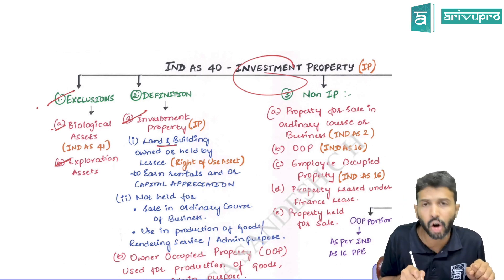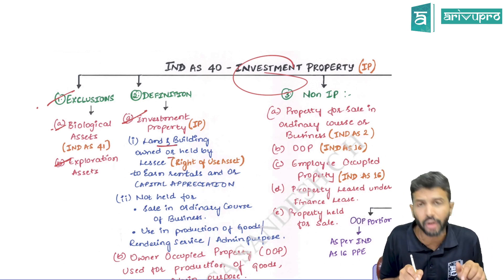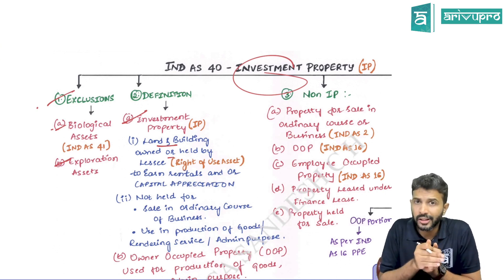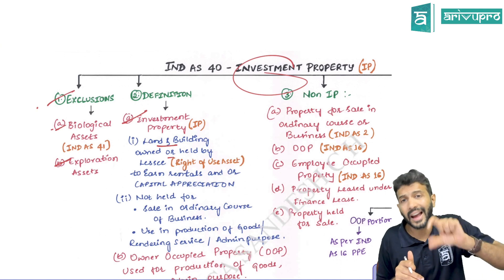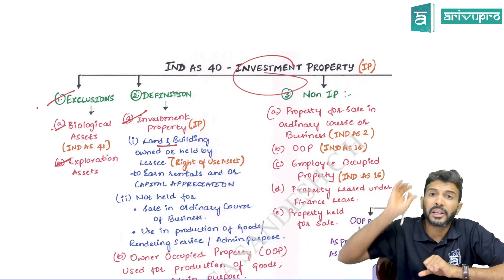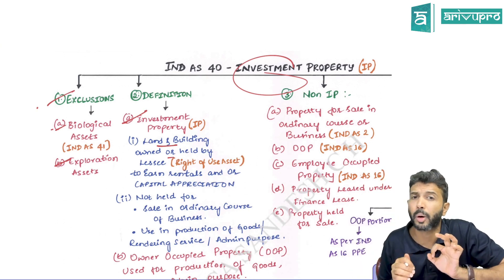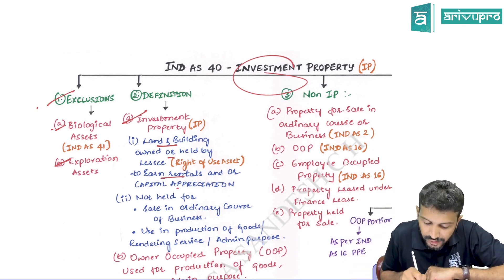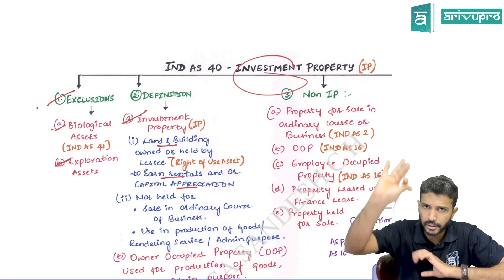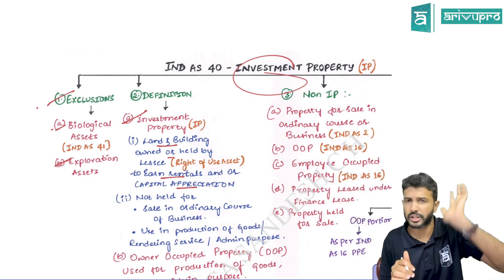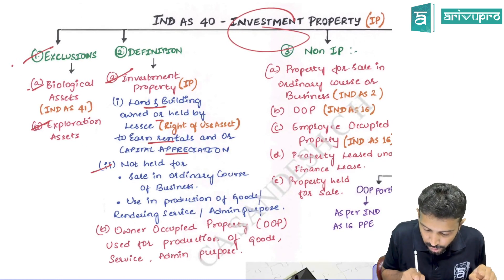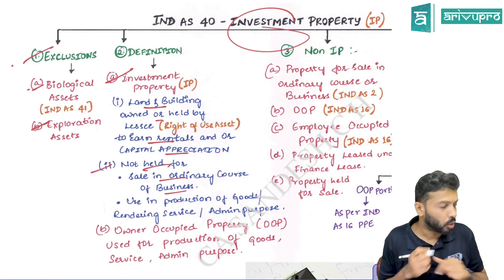Investment property means a property that should be land or building, or part of land or building, or both. You could hold this as an owner or as a lessee having a right of use over it, but the main intention of holding that property is to rent it out and earn rental income, or capital appreciation, or both. That is the meaning of the term investment property.